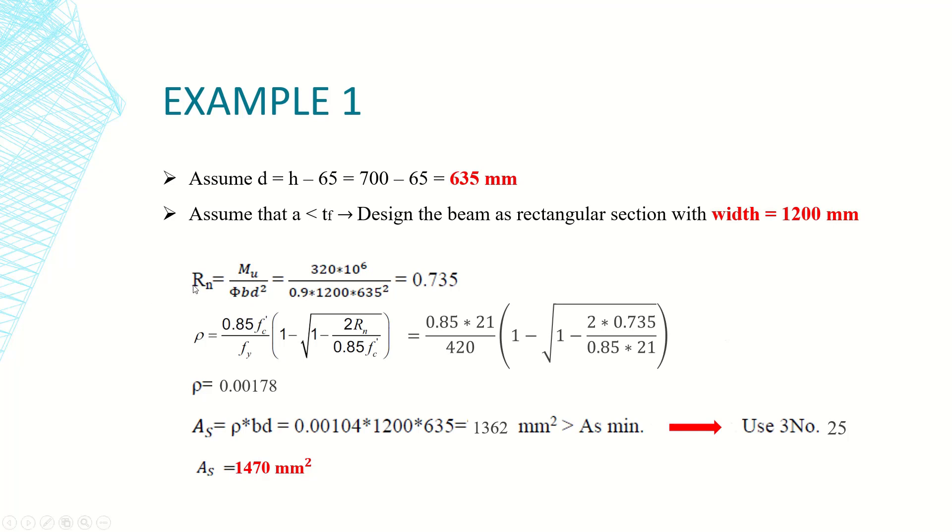First of all we determine the Rn factor which equals Mu over phi b d squared. Pay attention that b here is 1200 since we already assumed that. Direct application, we have the moment. Pay attention to transfer the unit from kilonewton meters to newton millimeters to be consistent in units.